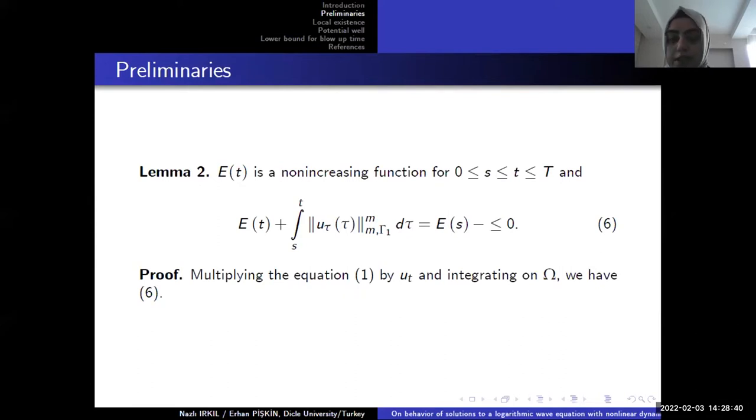For the proof of this, first we will multiply the equation 1 by ut and integrating on omega. And we use some Green formula. And we have the inequality 6.